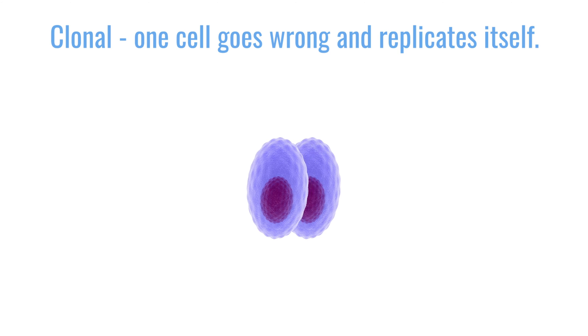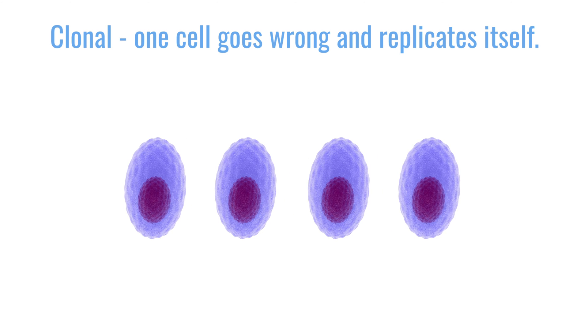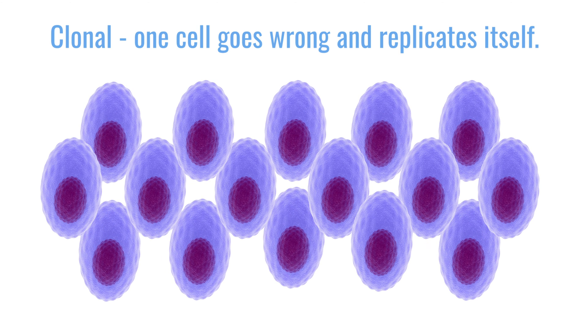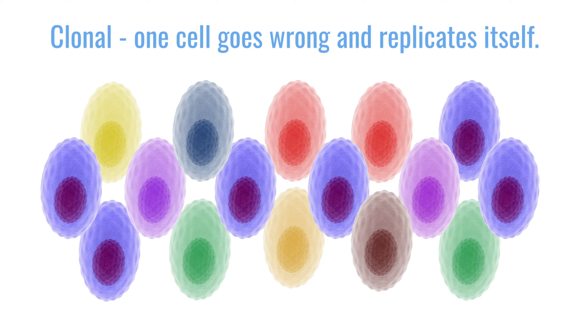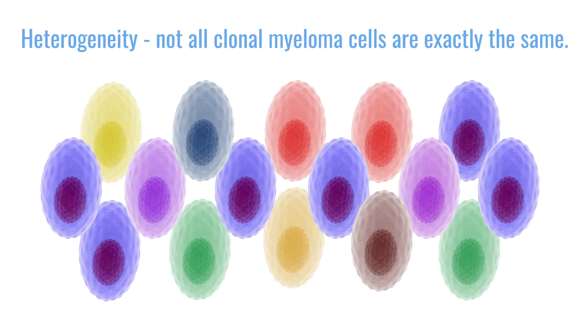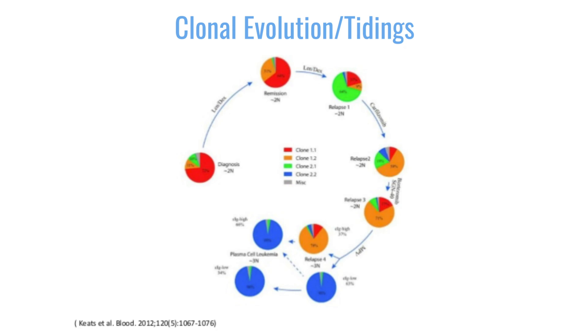The major lesson that sequencing has taught us is that 'clonal' means one cell goes wrong and then replicates itself. Myeloma is the archetypal example of a clonal disease — it makes one antibody, and that antibody is the M-spike, so they all look the same. But when you look more closely, not all of the cells are the same. That's called intraclonal heterogeneity or subclonal heterogeneity, which is important because it means the tumour can evolve. It evolves to escape treatment: if you put a selective pressure on the tumour, the cells that are sensitive die and the resistant ones grow out.